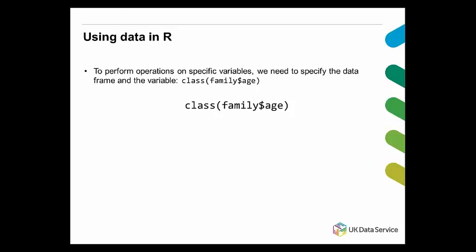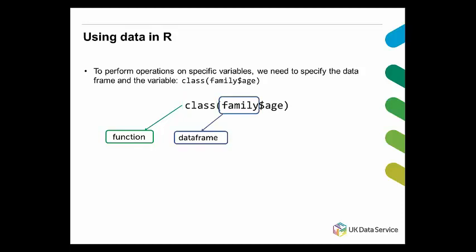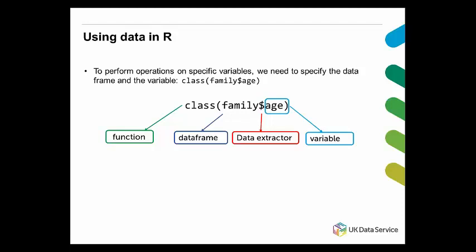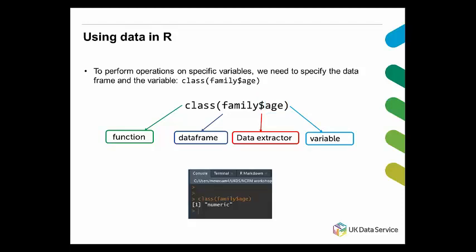R has a particular way of working. To perform any operation on a variable, we need to use the specific name of the data frame every time. For instance, there is an example here using the function class() on the family dataset for the variable age. The function class() gives us the type of variable — such as character, numerical, or whatever. You write the function followed by a bracket, then specify the data frame, in this case family, then a dollar sign followed by the variable name, age. After running the function, the result tells me that age is a numeric variable.